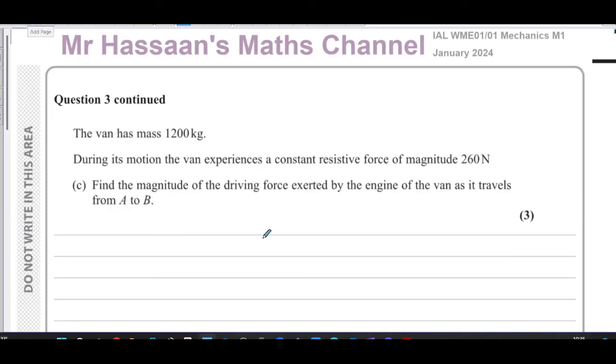Is there a part C here, yes there is. It says the van has a mass of 1200 kilograms. During its motion the van experiences a constant resistive force of 260 newtons. Find the magnitude of the driving force exerted by the engine of the van as it travels from A to B. So it's going with a constant acceleration of 0.8 meters per second squared. So it's going to have a driving force, the resultant force is the mass times acceleration.